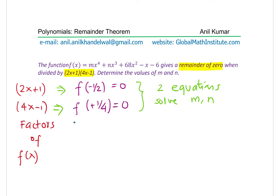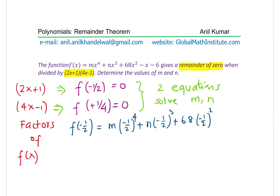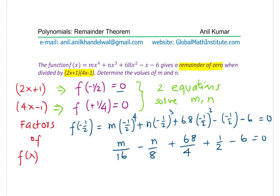Substituting x = -1/2, we get f(-1/2): M·(-1/2)⁴ + N·(-1/2)³ + 68·(-1/2)² - (-1/2) - 6 = 0. Simplifying: M/16 - N/8 + 68/4 + 1/2 - 6 = 0. Multiplying through by 16 gives us M - 2N + 4×68 + 8 - 96 = 0.